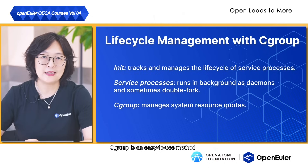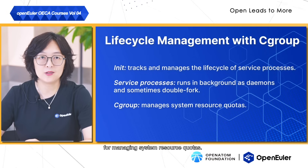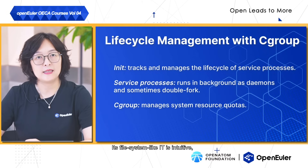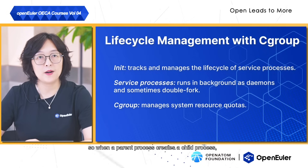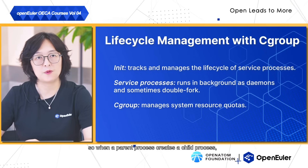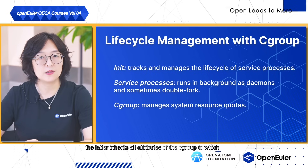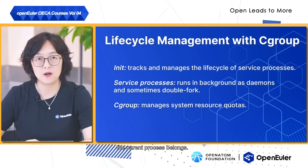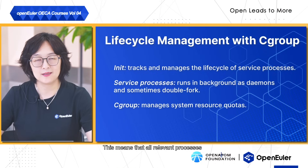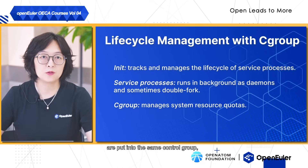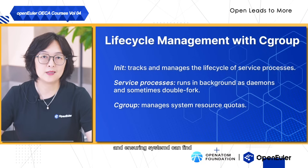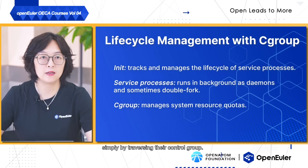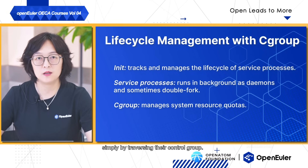C-group is an easy-to-use method for managing system resource quotas. Its file-system-like interface is intuitive, so when the parent process creates a child process, the latter inherits all attributes of the C-group to which the parent belongs. This means all relevant processes are put into the same control group, ensuring System-D can find the PIDs of all relevant processes simply by traversing their control group.